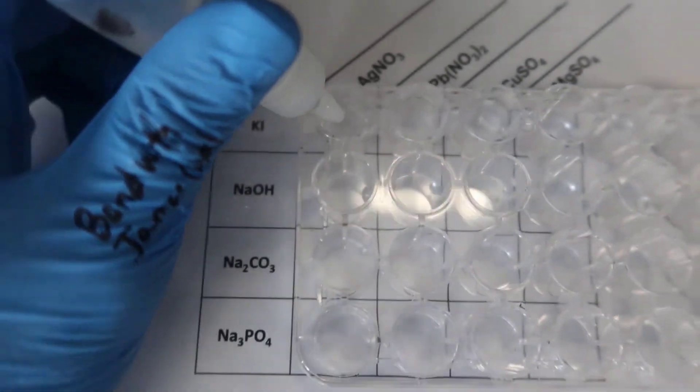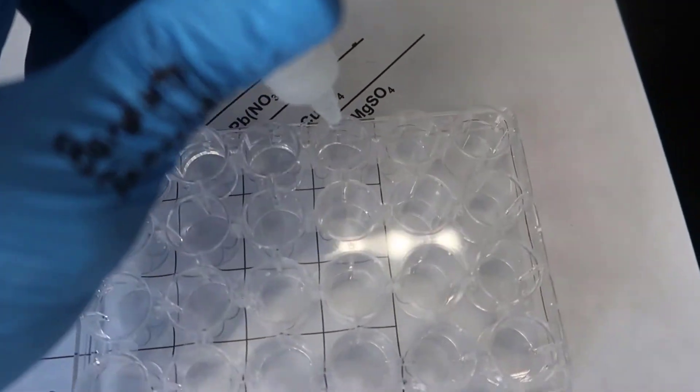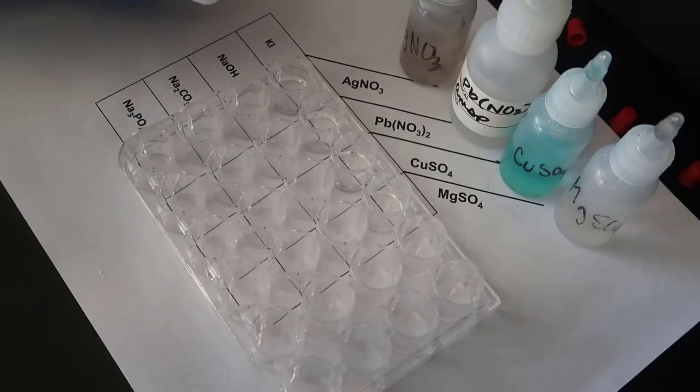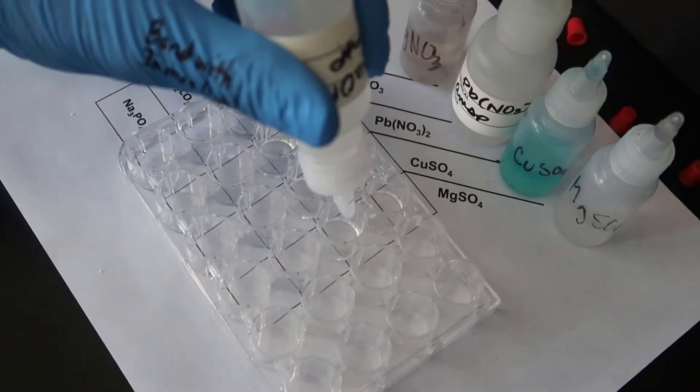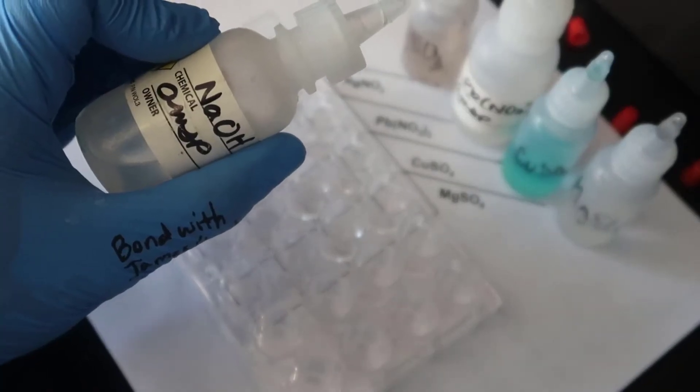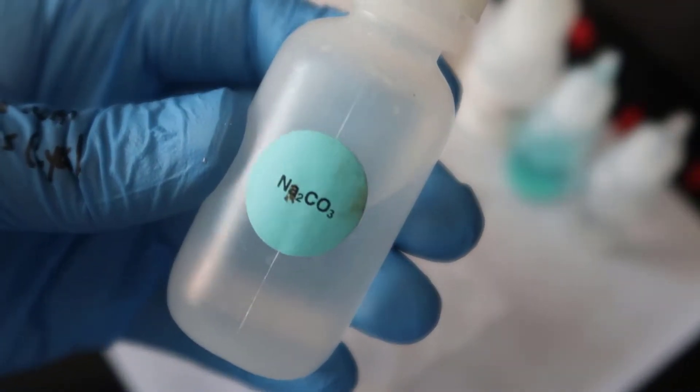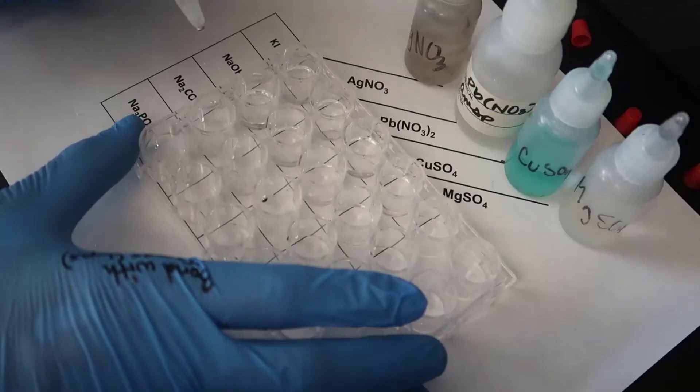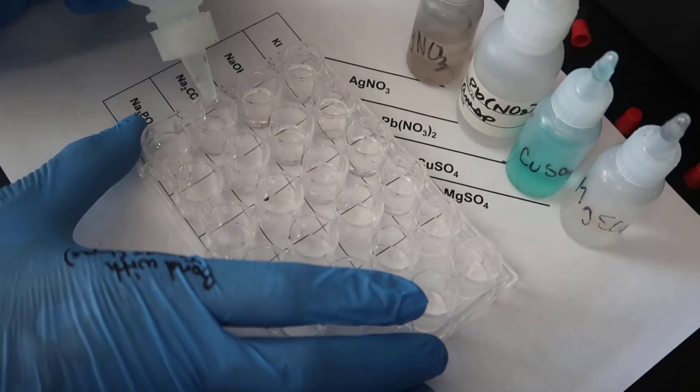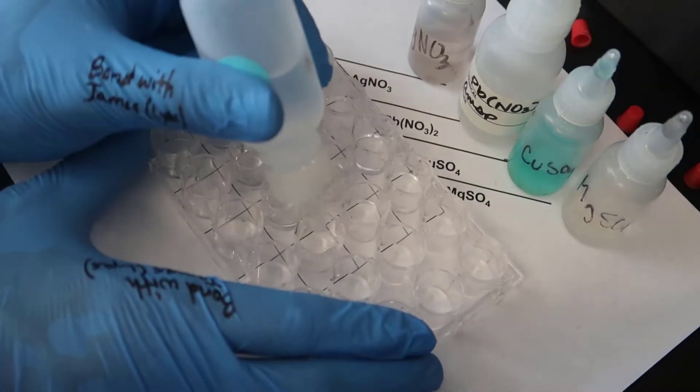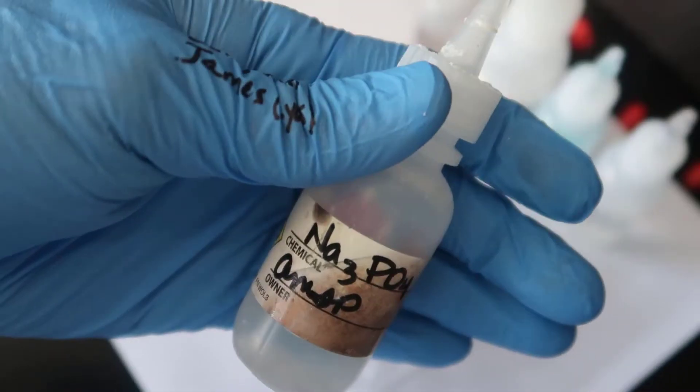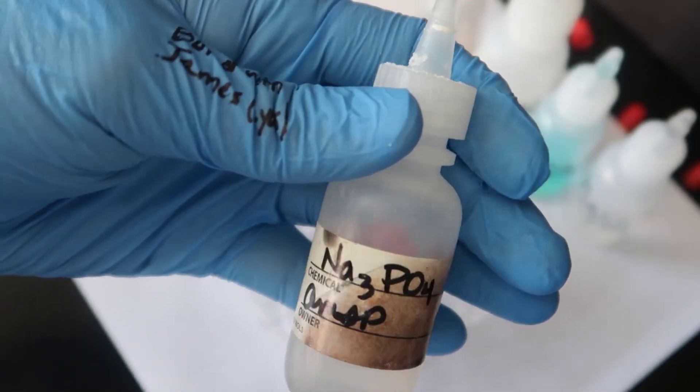So here is the KI. Okay, so that was the NaOH. Now I am going to add the Na2CO3. And then lastly going across the row, Na3PO4.